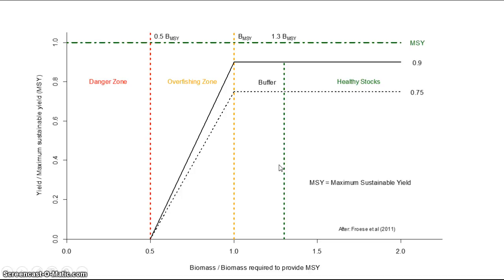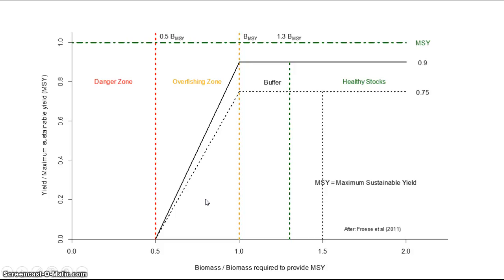A slightly more conservative strategy is represented by the dotted line. This one suggests that you should never take more than 75% of the maximum sustainable yield. And as before, below BMSY — below the level of stock required to produce the maximum sustainable yield — there should be a decrease in the amount of stock taken. The point at which the buffer should be varies with stocks; the one-third bigger is a rule of thumb for many stocks. But for sensitive forage fish, such as low trophic level stocks fed on by more predatory fish, some people suggest that a higher level — such as 1.5 times, or half again bigger than the size of stock required to produce maximum sustainable yield — should be used as the buffer point.